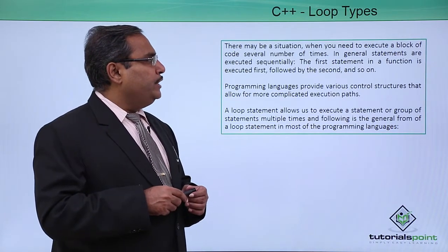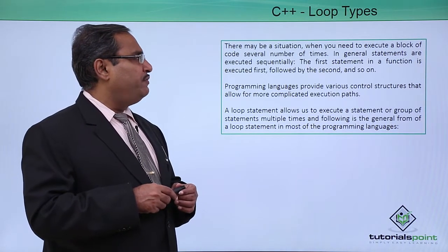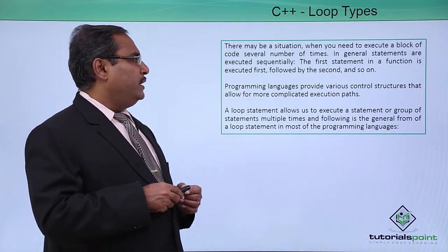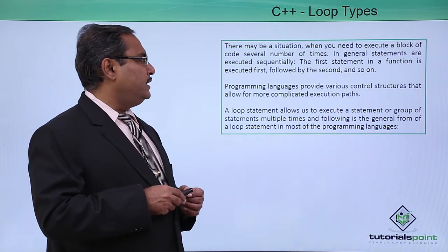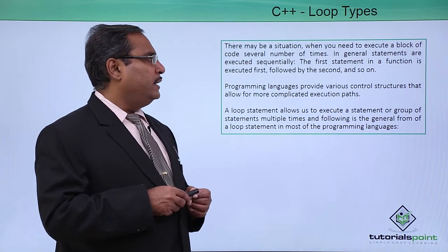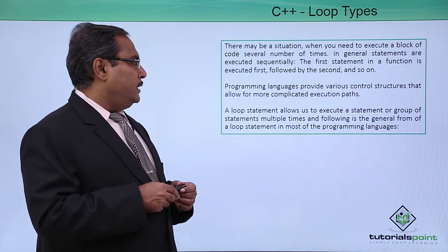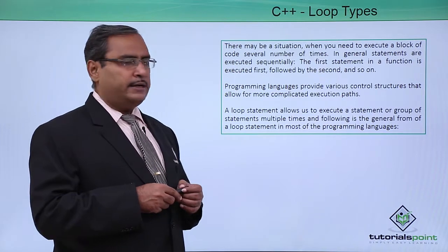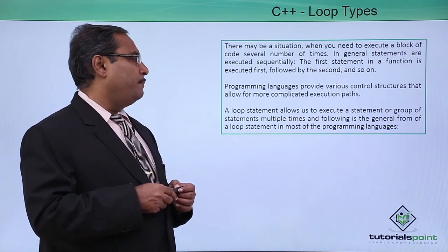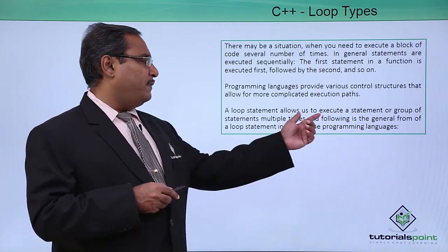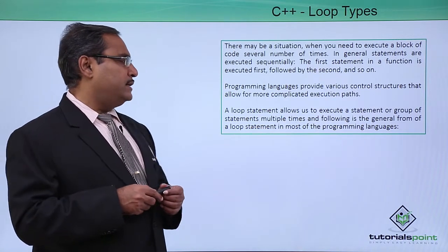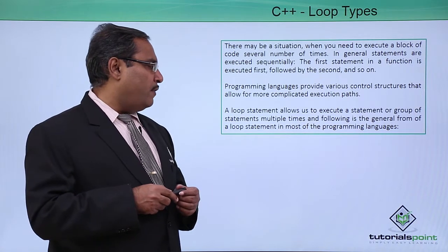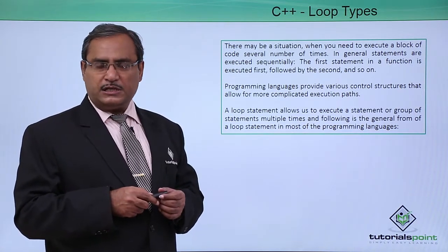There may be a situation when you need to execute a block of code several number of times. In general, statements are executed sequentially — the first statement in a function is executed first, followed by the second, and so on. Programming languages provide various control structures that allow for more complicated execution paths. A loop statement allows us to execute a statement or a group of statements multiple number of times, and following is the general form of the loop statements available in C++ coding.